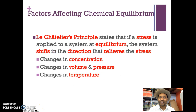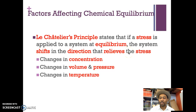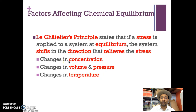There are certain factors that can affect chemical equilibrium, and this is referred to as Le Chatelier's principle. This principle states that if a stress is applied to a system at equilibrium, the system shifts in the direction that relieves the stress. In other words, if something is affecting the reaction, the reaction is going to want to move in the opposite direction.